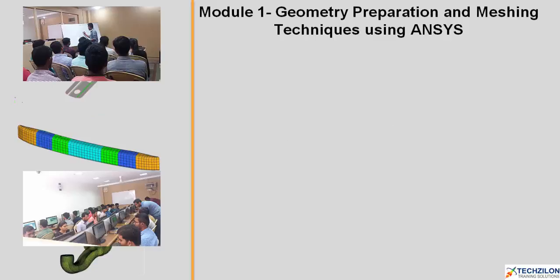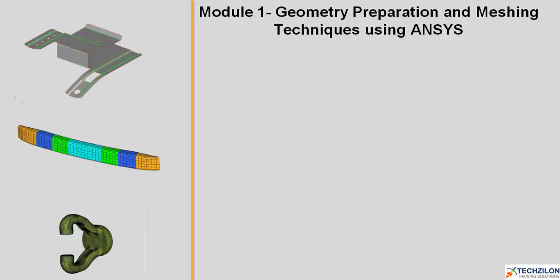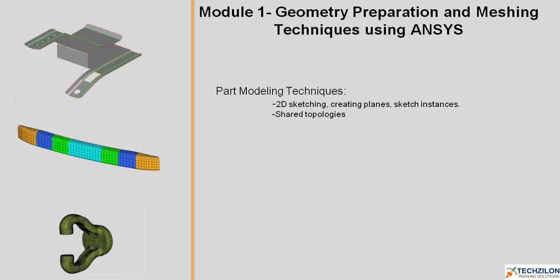In module 1, we'll be looking into geometry preparation and meshing techniques using ANSYS. You will learn part modeling techniques, under which you'll have 2D sketching, creating planes, and sketch instances. You'll learn shared topologies, clean-up, connect and repair operations, topology alignment, and model estimation methods.